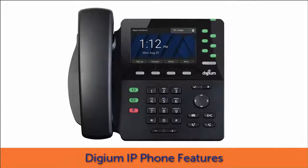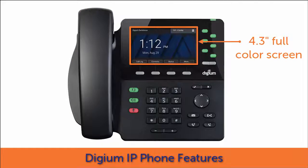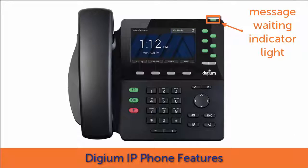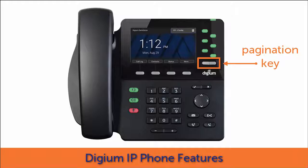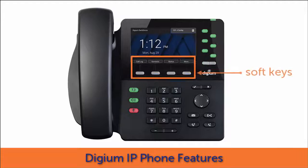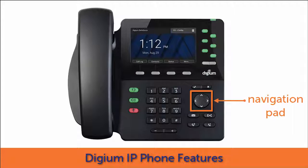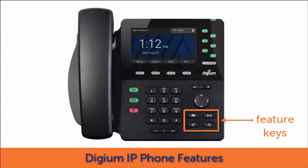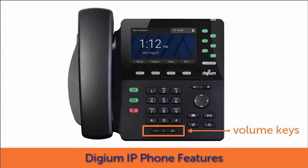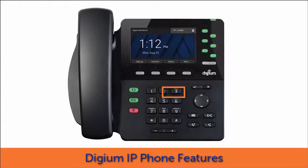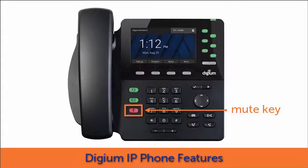The interactive features of the Digium IP Phone include a handset, a 4.3-inch full-color display screen, a message waiting indicator light, line and rapid dial keys, a pagination key, soft keys, a navigation pad, feature keys, a numeric keypad, volume keys, confirmation keys, and speakerphone, headset, and mute keys.